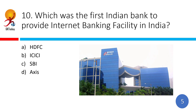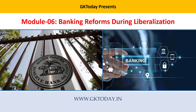Which was the first Indian bank to provide internet banking facility in India? The correct answer is ICICI Bank. And the first bank to have ATM services — we have discussed it, so leave your answers in the comments. That's all for this quiz. If you liked this, don't forget to like, share and subscribe, and leave your scores in the comments. Until next time, goodbye and good luck.